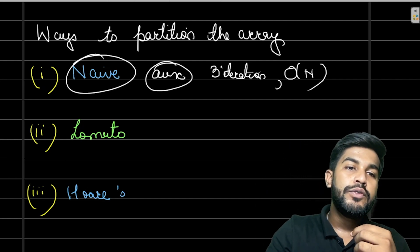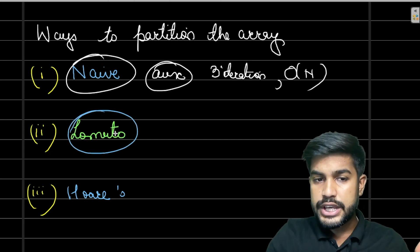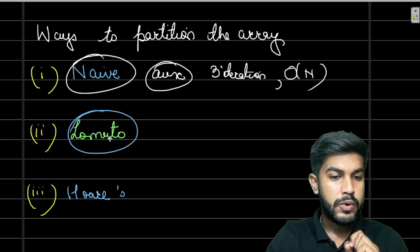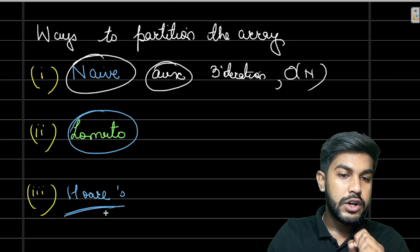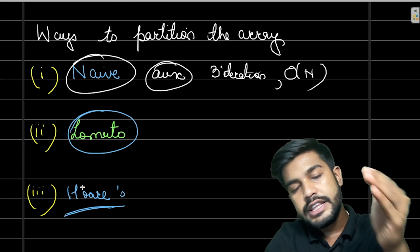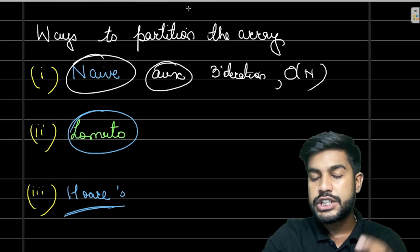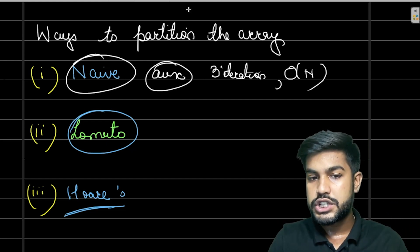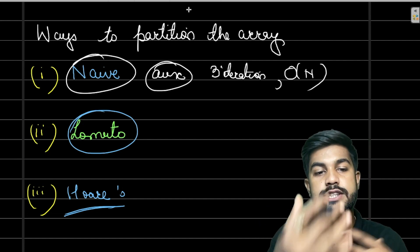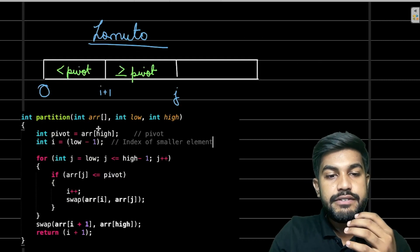Moving on to Lomuto — this is the second most efficient partitioning algorithm and it doesn't use an auxiliary array. Then there's Hoare's partition algorithm. Let us first learn about Lomuto's partition algorithm, then we'll talk about Hoare's. We won't go deep into Hoare's because we won't be using it here — I'll explain why shortly.